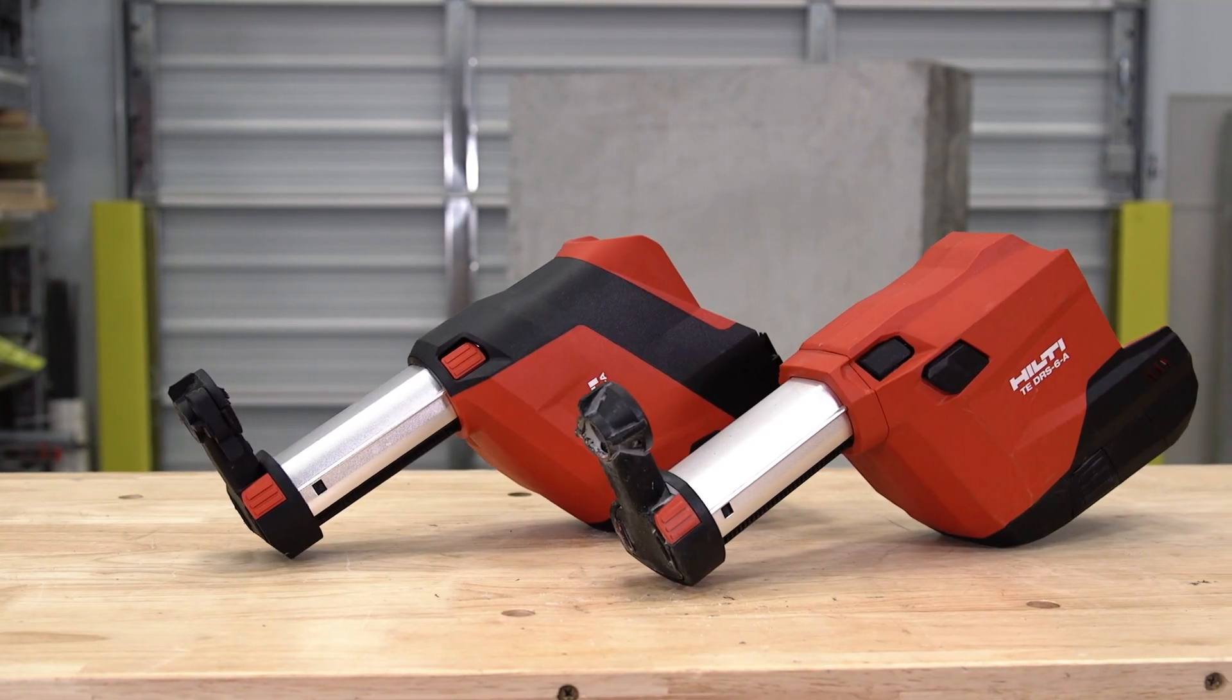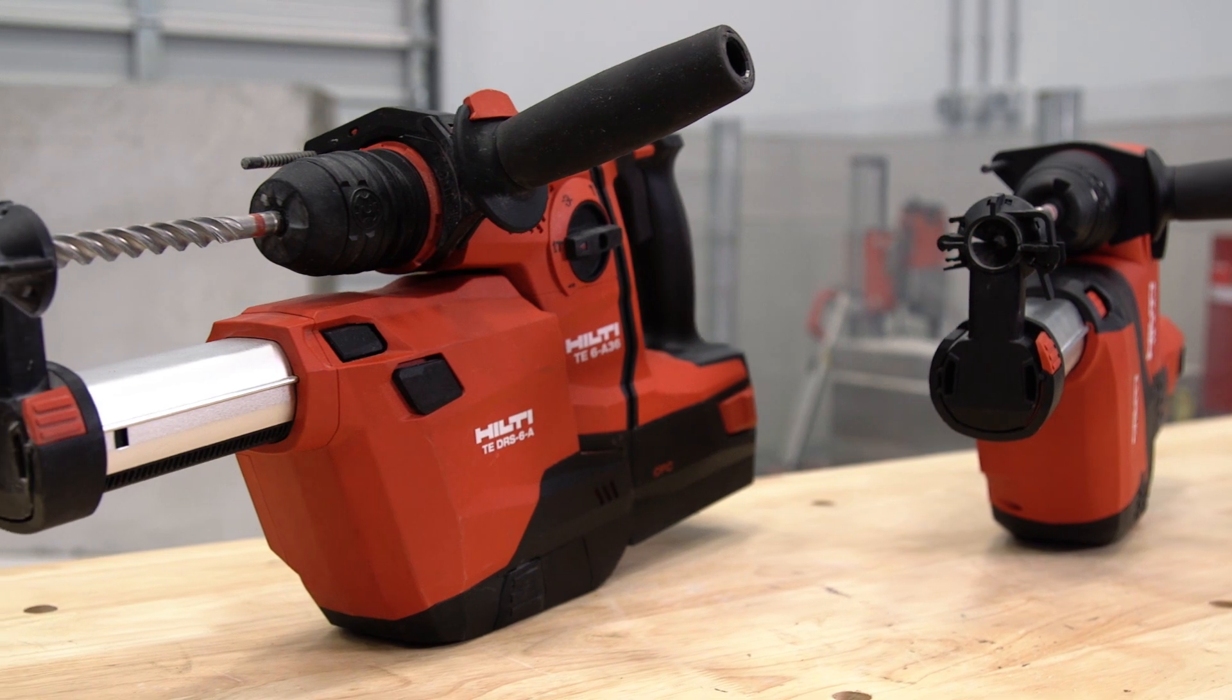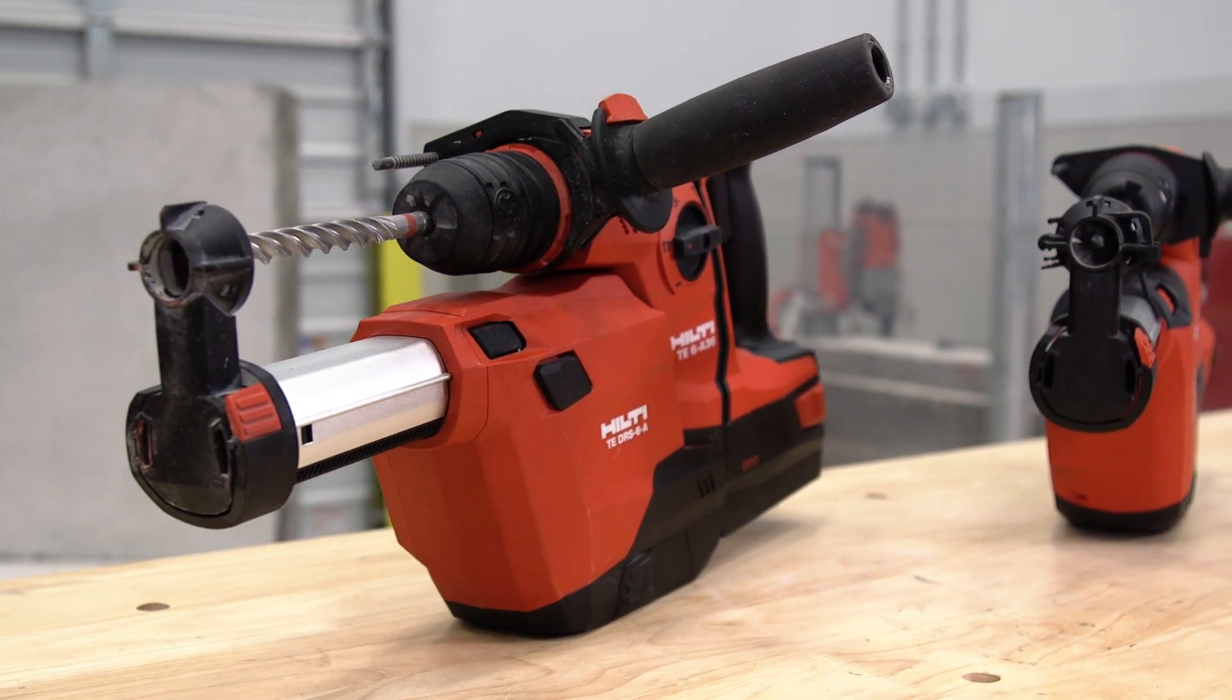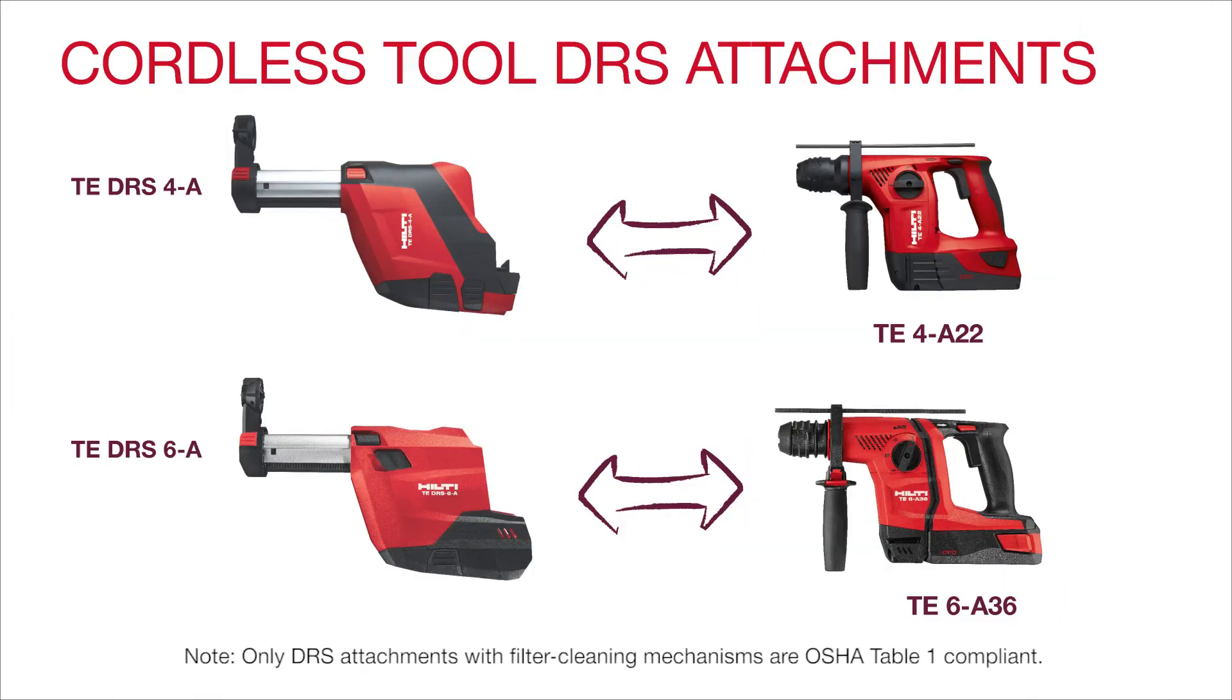In this video, we will show you how to use our smaller corded and cordless combi hammers with onboard dust collection attachments. These systems do not require a vacuum. This method is the same for all the tools you see here, both corded and cordless.